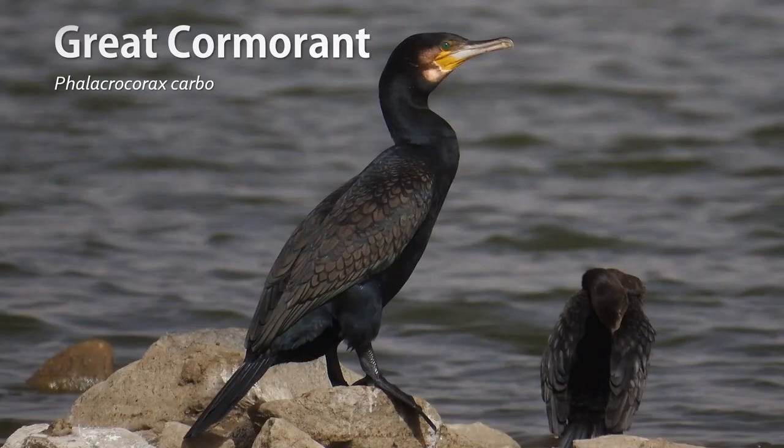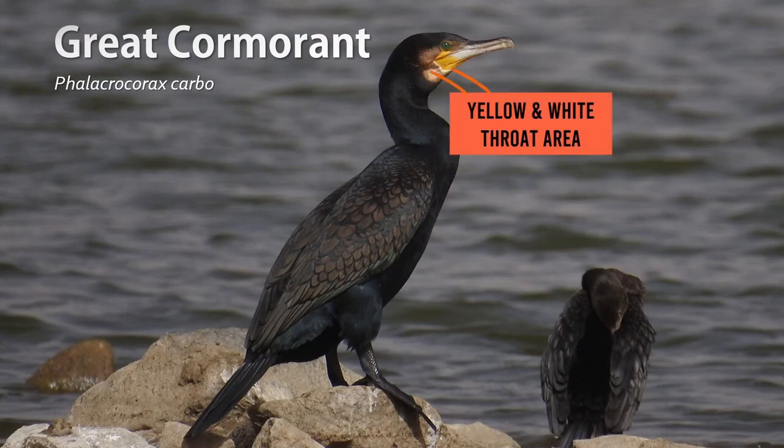The great cormorant is the largest cormorant found in Australia. They are also found in Europe, Asia, Africa, and the Americas. This species is primarily black and often has a white patch just above the legs. The key identifier is the yellow and white coloring on the face and throat pouch — recall our 'makeup' concept. The great cormorant isn't the best name as it doesn't describe its appearance, but it's the name we're stuck with.